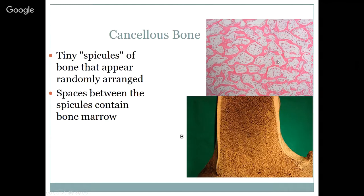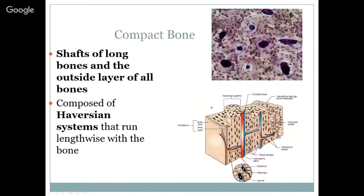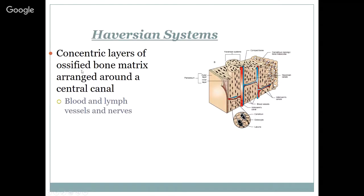Here is a cross section of what that cancellous bone looks like. There are tiny spicules of bone that appear randomly arranged, but there is a bit of a pattern there. Those spaces between the spicules contain that bone marrow — the baby cells that are going to make red blood cells and white blood cells. Compact bone forms the shafts of long bones and is the outer layer of all bones. It's composed of Haversian systems that run lengthwise with the bone — concentric layers of ossified bone matrix arranged around a central canal. Blood and lymph vessels and nerves are contained within those Haversian systems.